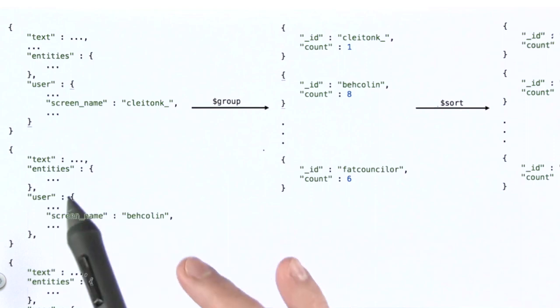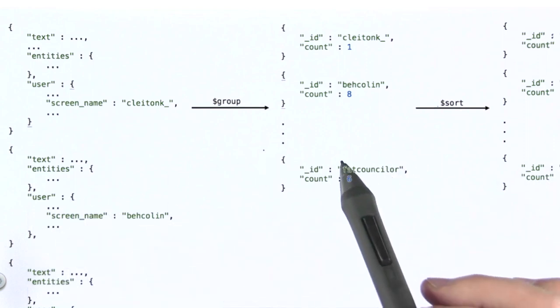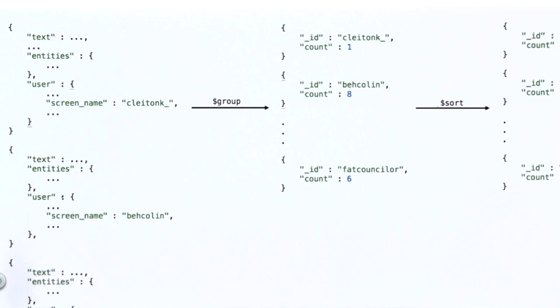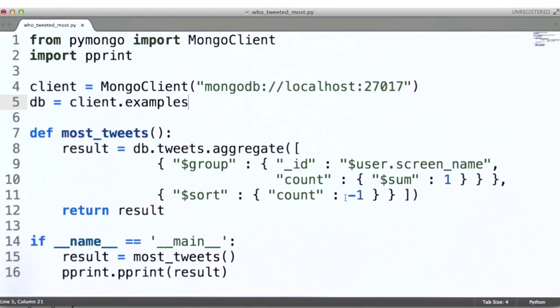This is a representation of the aggregation pipeline that we saw in our previous example. Again, that example looks like this.